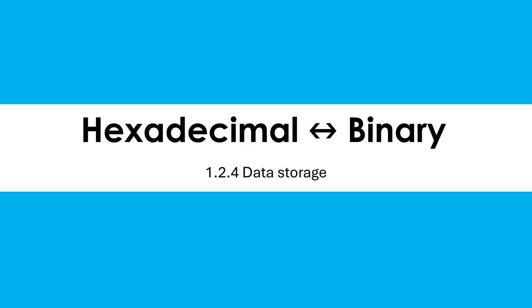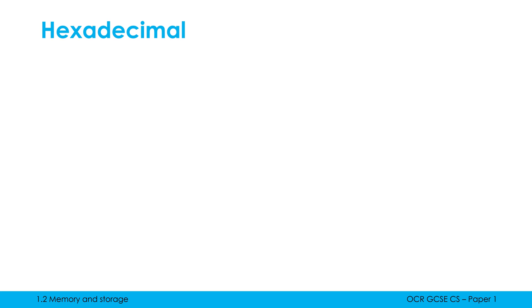We're now going to have a look at what hexadecimal is and go through how you can convert between it and binary. So hexadecimal or hex for short is just another numbering system.